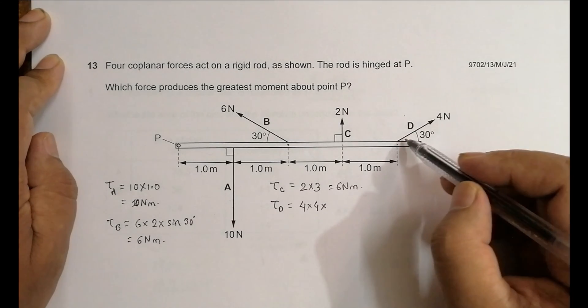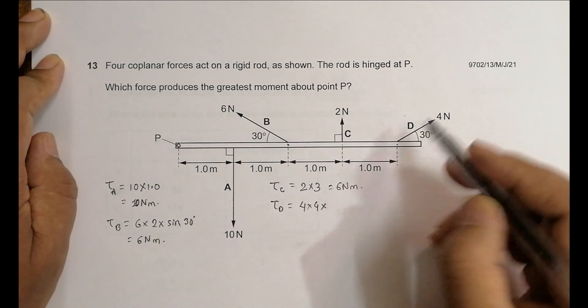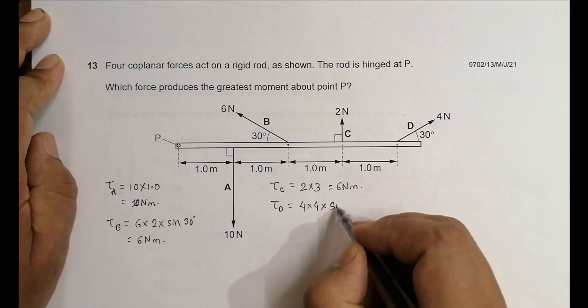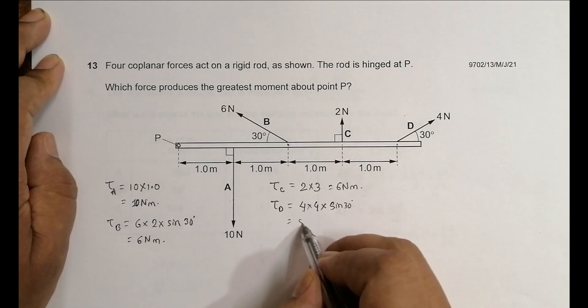Sine of 30. So it is 4, 4, 16. 16 into 0.5 equals 8 newton meters.